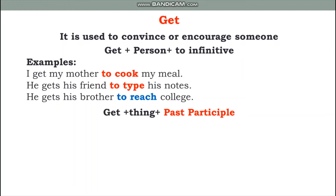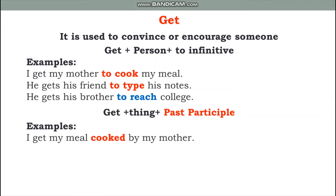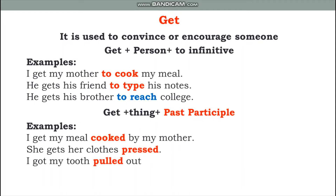I hope you have watched my other video on past participle and present participle. When 'get' is used with a thing, we use the past participle. For example: 'I get my meal cooked' — 'cooked' is the past participle, the third form. More examples: 'She gets her clothes pressed.' 'I got my tooth pulled out.'